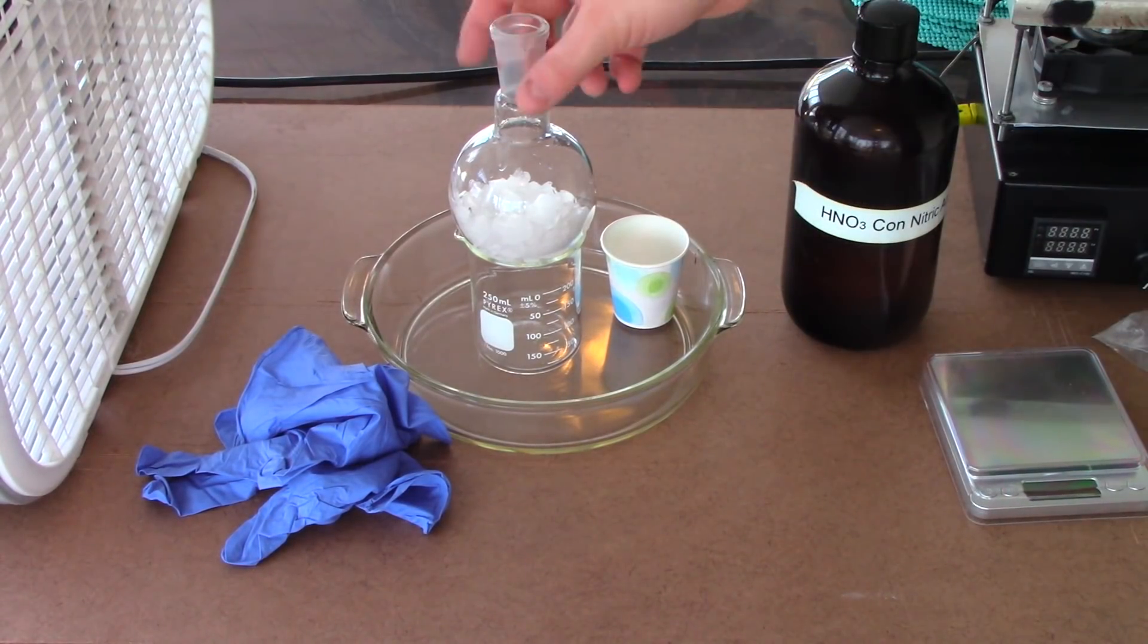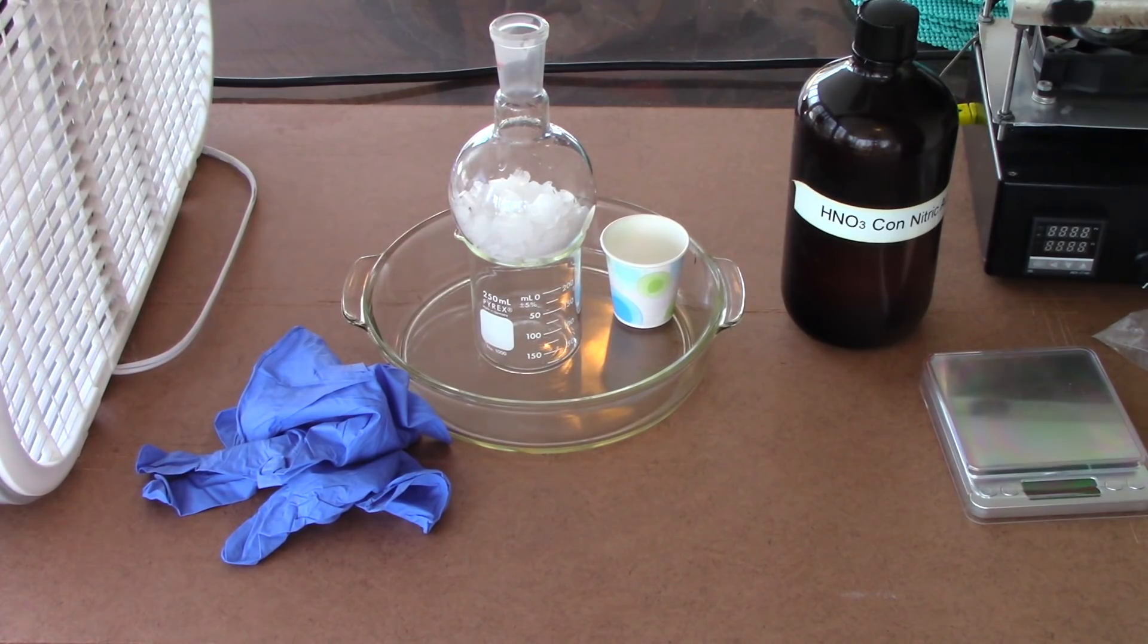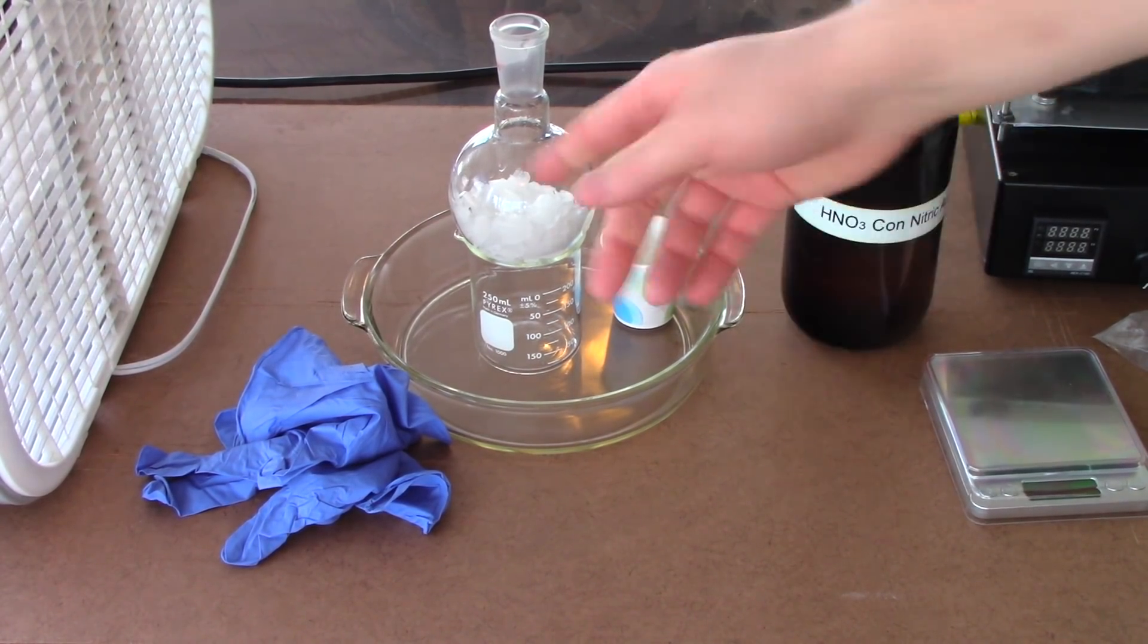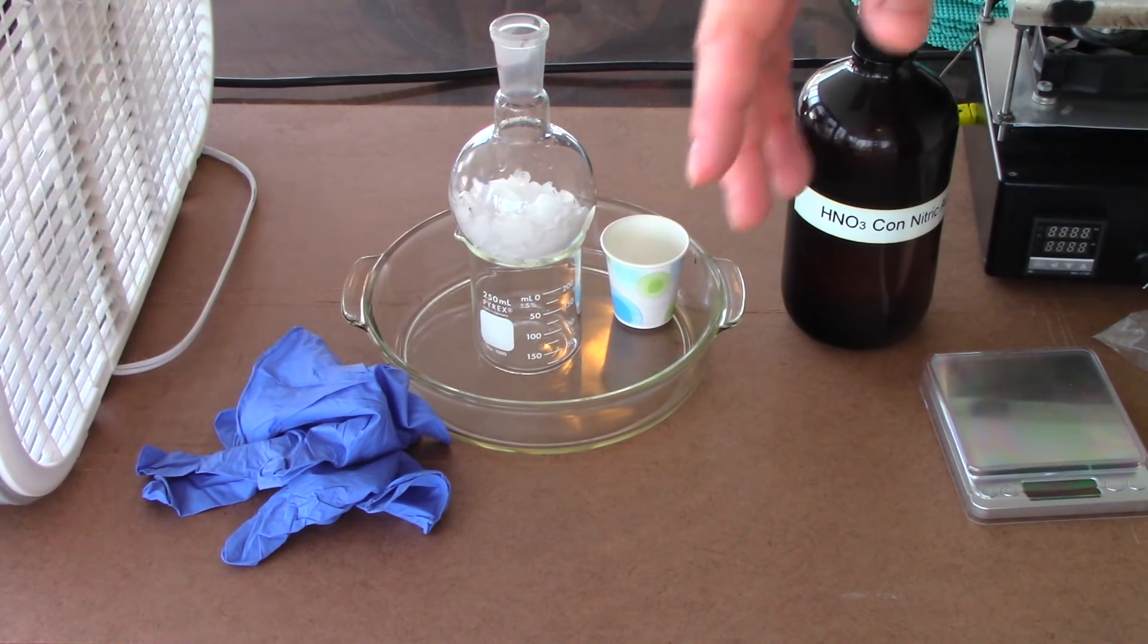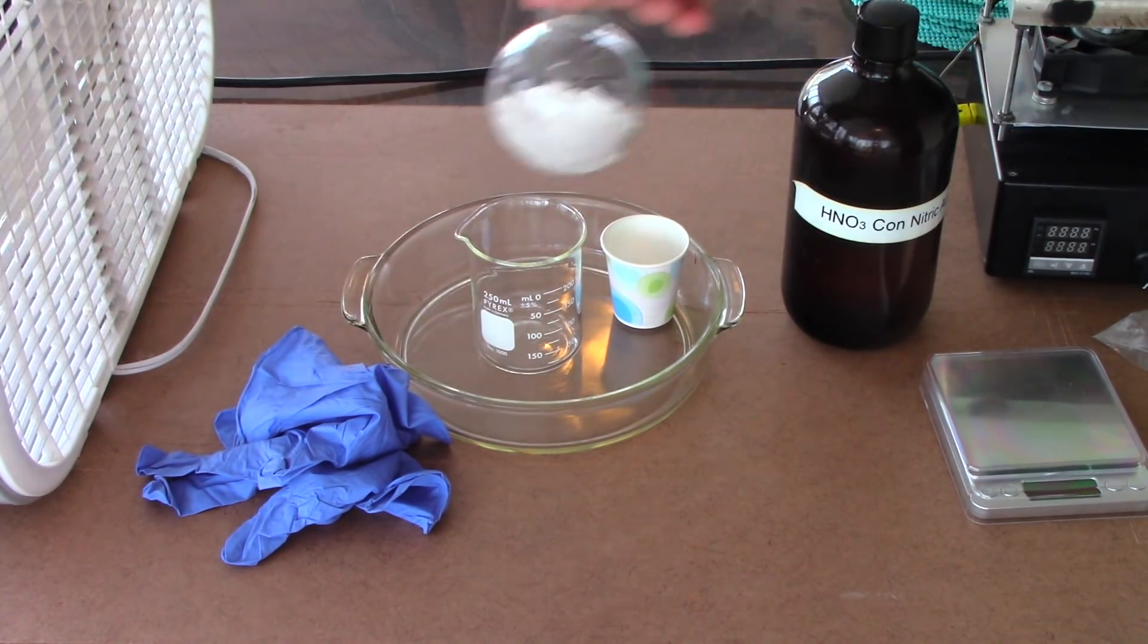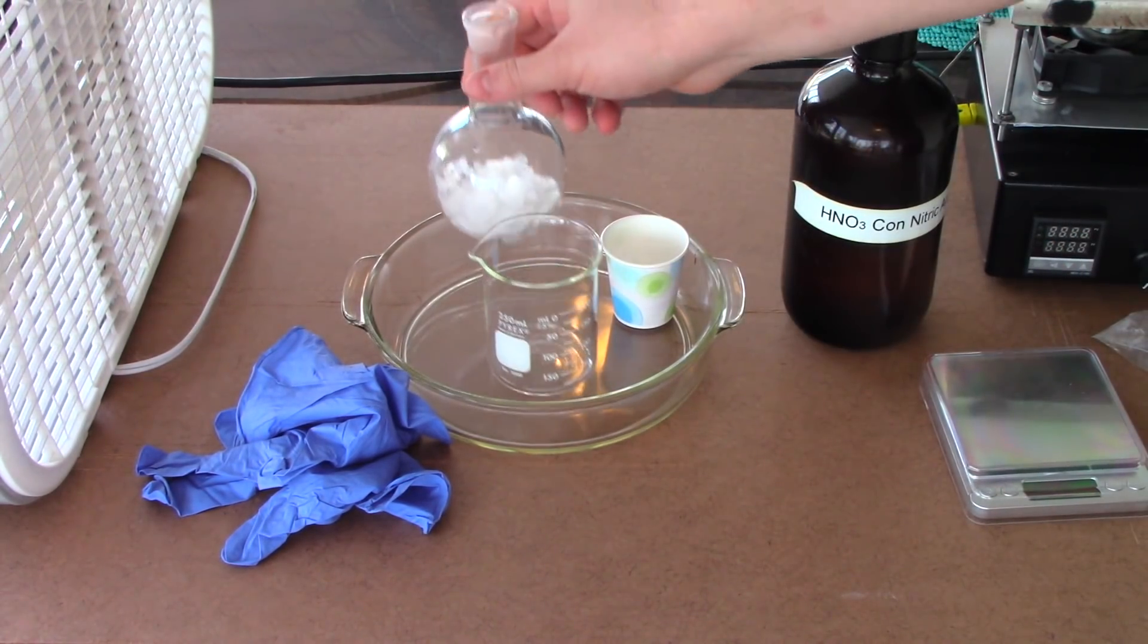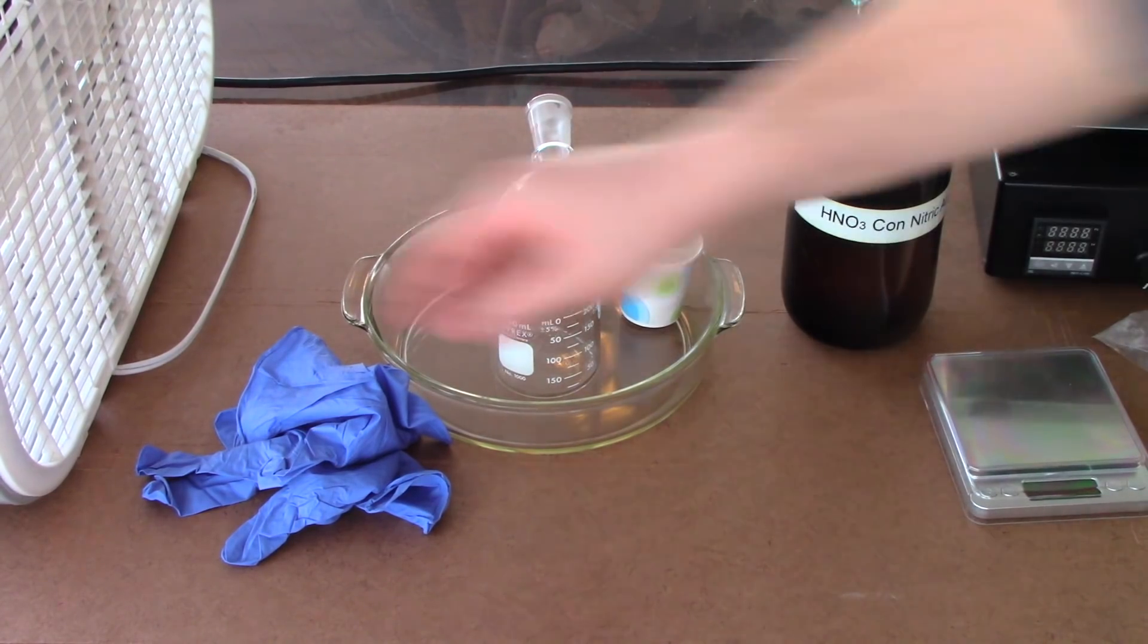All right guys, so here we are outdoors. I have a fan set up here to pull fumes away. Obviously working with nitric acid, it's going to produce some nitrogen dioxide fumes. And even though we're outdoors, still I want to get them away as quickly as possible. So, just venting those off to the side. Got a round bottom flask just to recondense some of that nitrogen dioxide fumes. And we have our nitric.